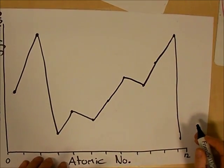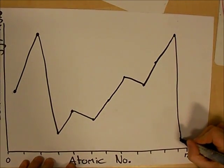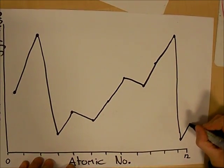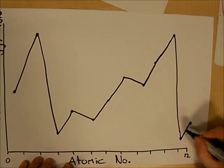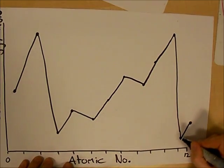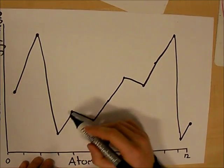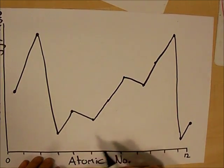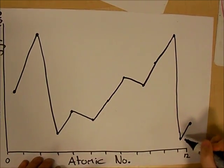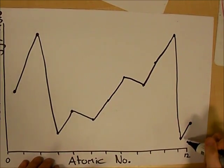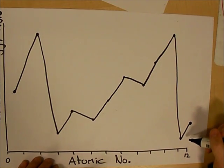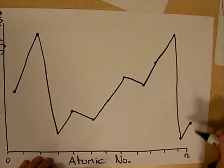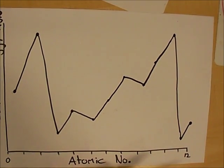The next and final element discussed, atomic number 12, shows an increase in ionisation energy similar to the increase seen at atomic number 4, due to increased nuclear charge. More protons equals a stronger attraction and more energy needs to be used to remove an electron.